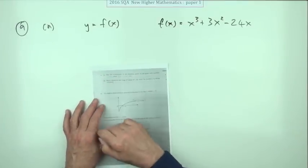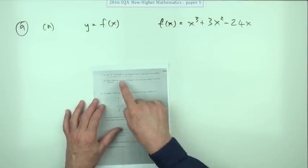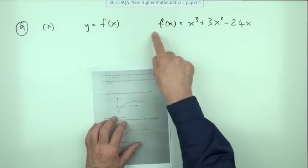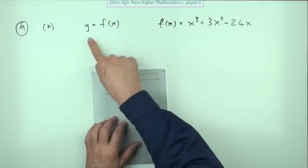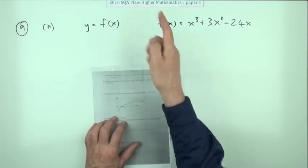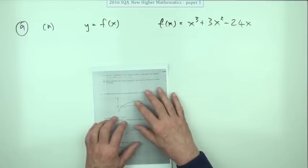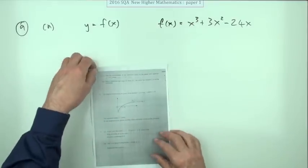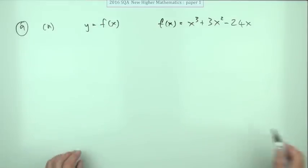Number 9 then, two parts, six marks. First part: find the coordinates of the stationary points on the graph with this equation. Notice it's got y equals f of x and then f of x equals, but since it's talking about stationary points for part a, I'm just going to refer to them as y equals.